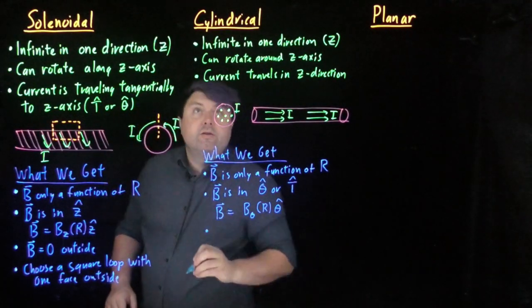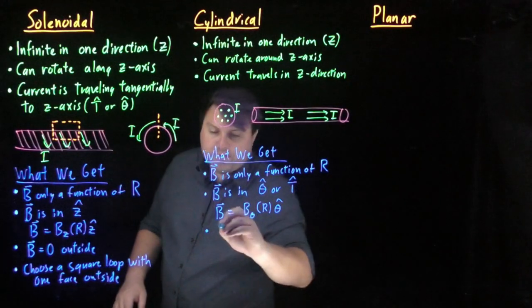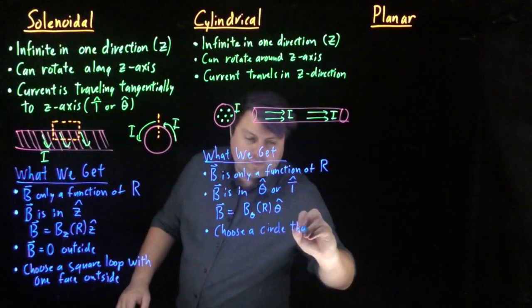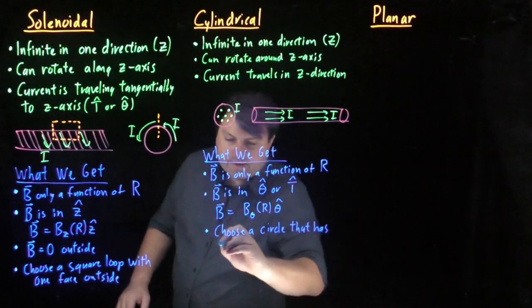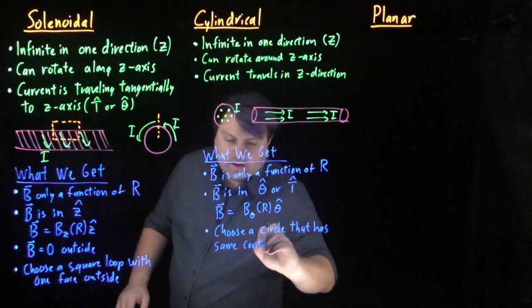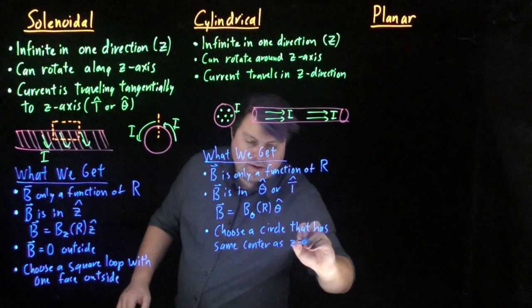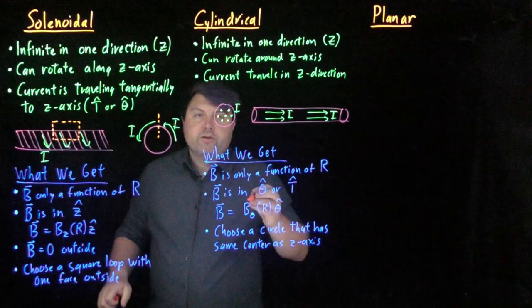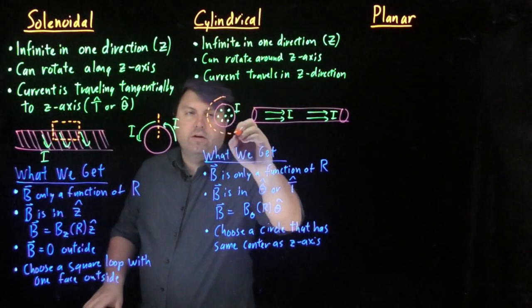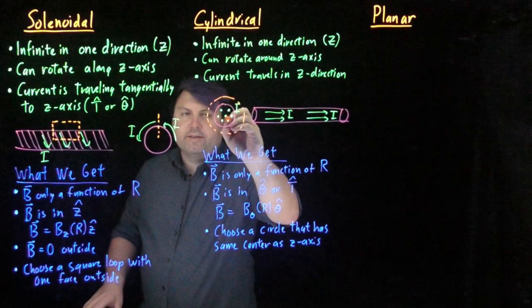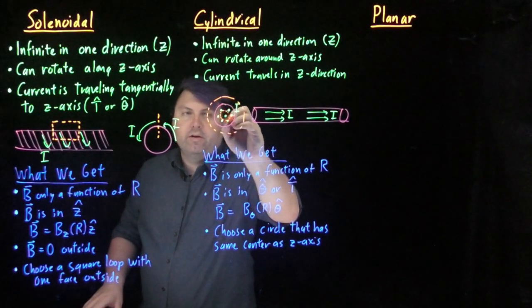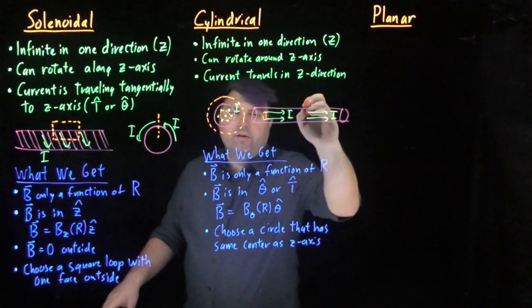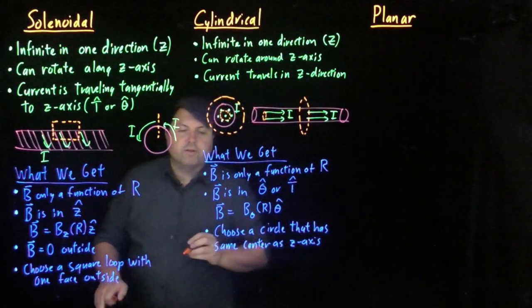So for our cylindrical symmetries, for our Amperian loops, we want to choose a circle that has the same center as the z-axis. So I could choose a circle that has the same center or another circle that has the same center. In this case, it would look like a circle in this case or a circle in this case.